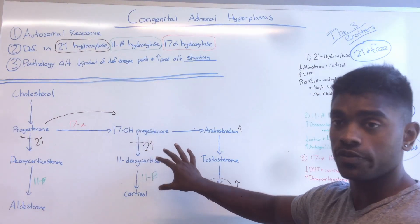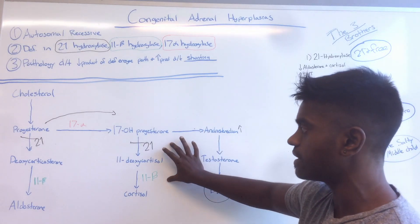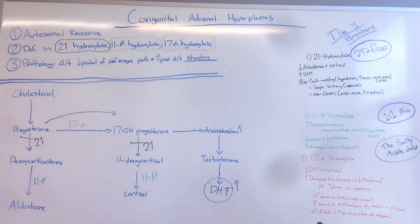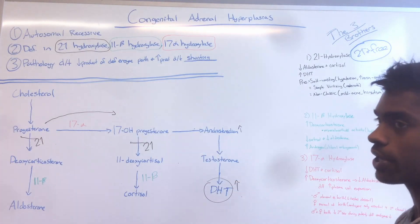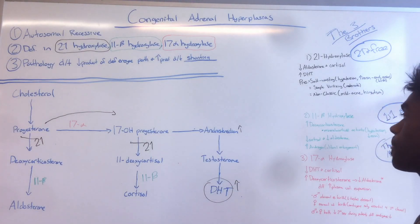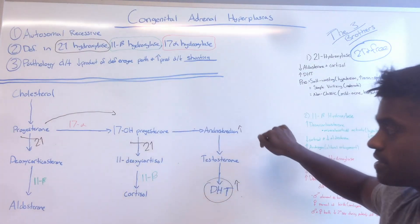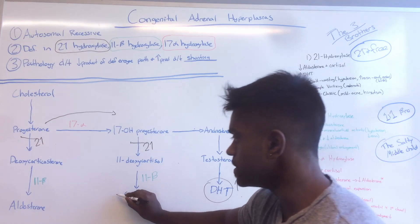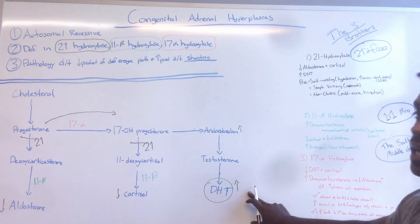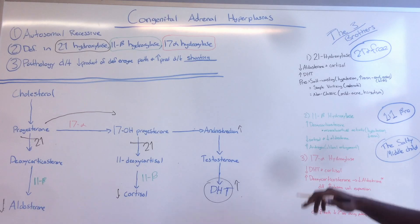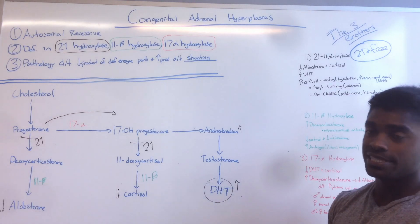This pathway is simplified in order to show the key enzymes involved, and it could be helpful during your boards if you're very confused and can't remember things on the spot. As you can see, since there's shunting occurring due to these roadblocks, you'll have a decrease in cortisol, a decrease in aldosterone, and an increase in DHT.